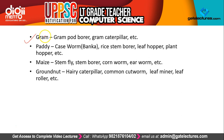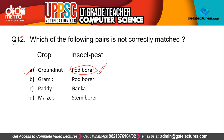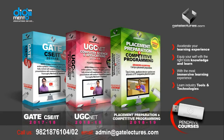For background: Gram's main insect pests are gram pod borer and gram caterpillar. Paddy's main pests include gundhi bug (Bangka), rice stem borer, leaf hopper, and plant hopper. Maize pests include stem fly, stem borer, corn worm, and earth worm. Groundnut's main pests are hairy caterpillar, common cut worm, leaf miner, and leaf roller. So pod borer belongs to gram, not groundnut. The answer is A — Groundnut and Pod Borer.